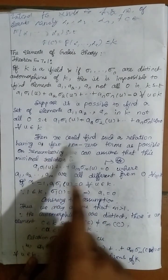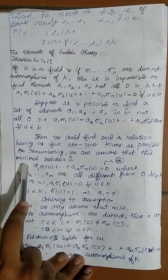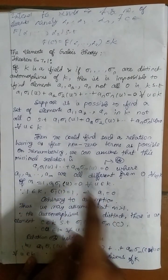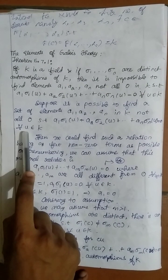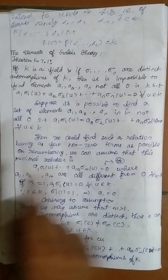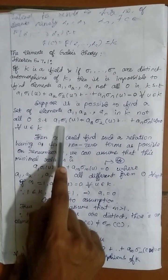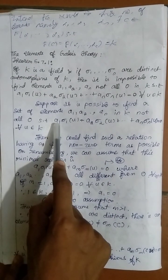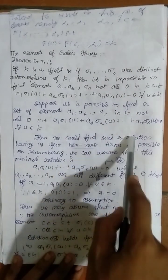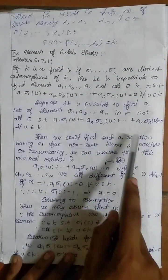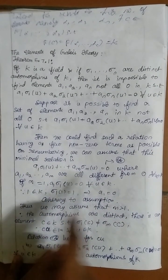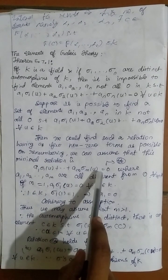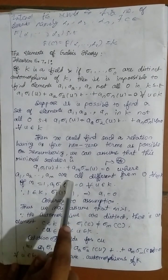If this is true, then we could find such a relation having as few non-zero terms as possible. On renumbering, we can assume that this minimal relation is: a1·sigma_1(u) + ... + am·sigma_m(u) = 0, where a1, a2, ..., am are all different from zero — they are non-zero for all u belonging to k. Some coefficients like a1, a2 may be zero, so we take only the non-zero ones to form this minimal relation.